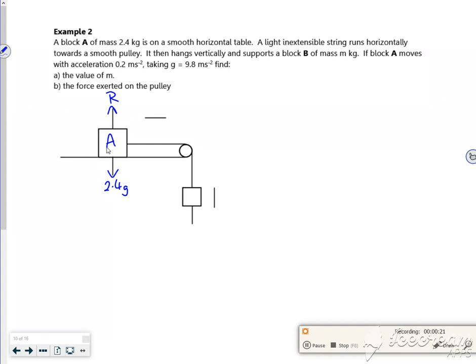It's got a light inextensible string that runs horizontally towards a smooth pulley. It hangs vertically and supports block B which has mass M. There's one string connecting, so there's one set of tensions there.